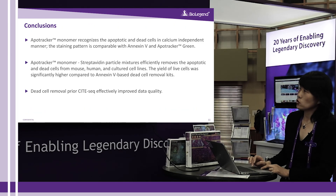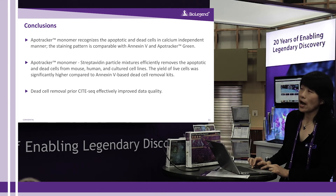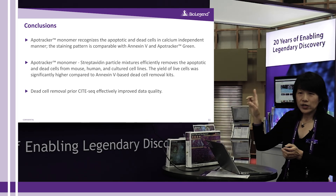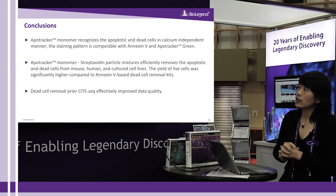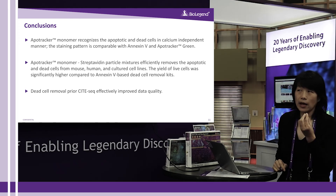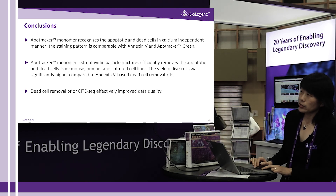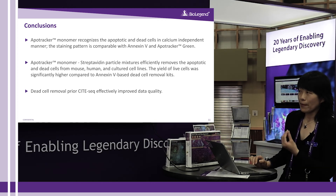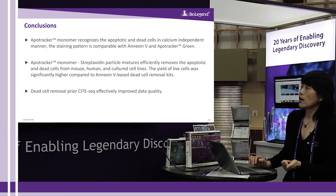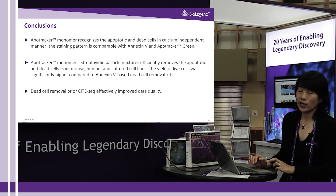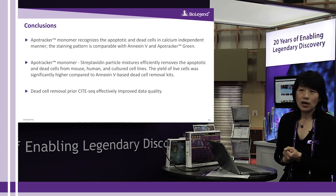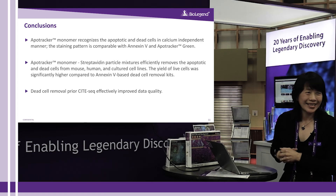In conclusion, Apple Tracker Monomer recognizes apoptotic and dead cells in a calcium-independent manner, and the staining pattern is comparable with Annexin V. Apple Tracker Green is another calcium-independent probe for apoptosis detection but works only for flow cytometry, not for magnetic separation. The Apple Tracker Monomer combined with streptavidin particles efficiently removes apoptotic and dead cells from mouse, human, and cultured cell samples. The yield of live cells is significantly higher compared to an Annexin V-based dead cell removal kit, and dead cell removal efficiently improves data quality in downstream applications such as single-cell analysis.